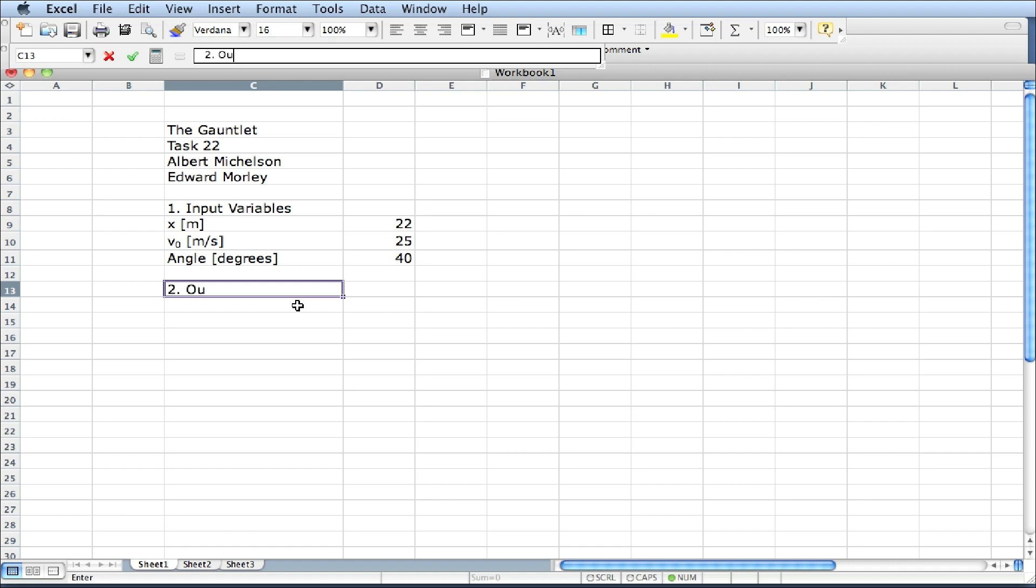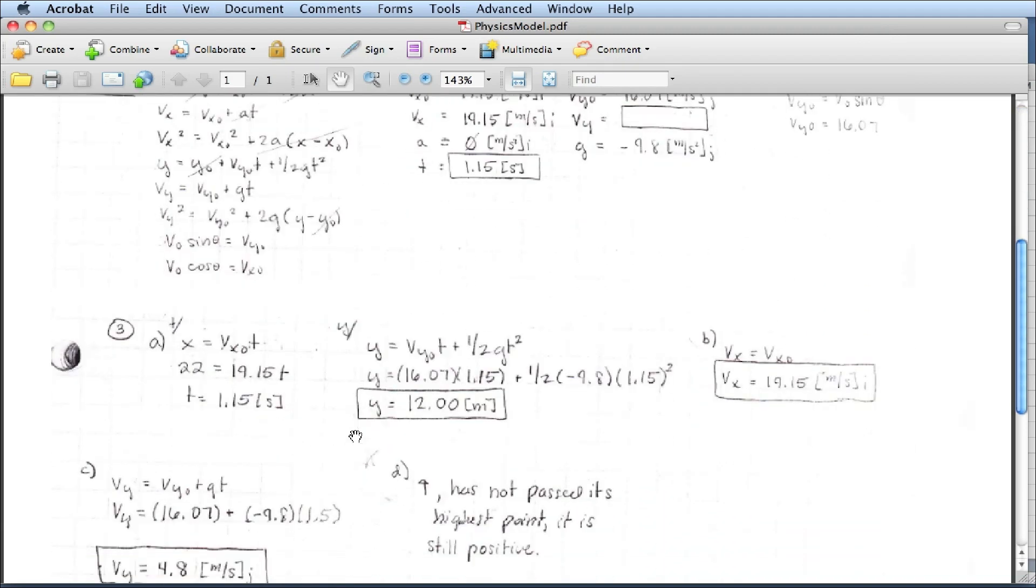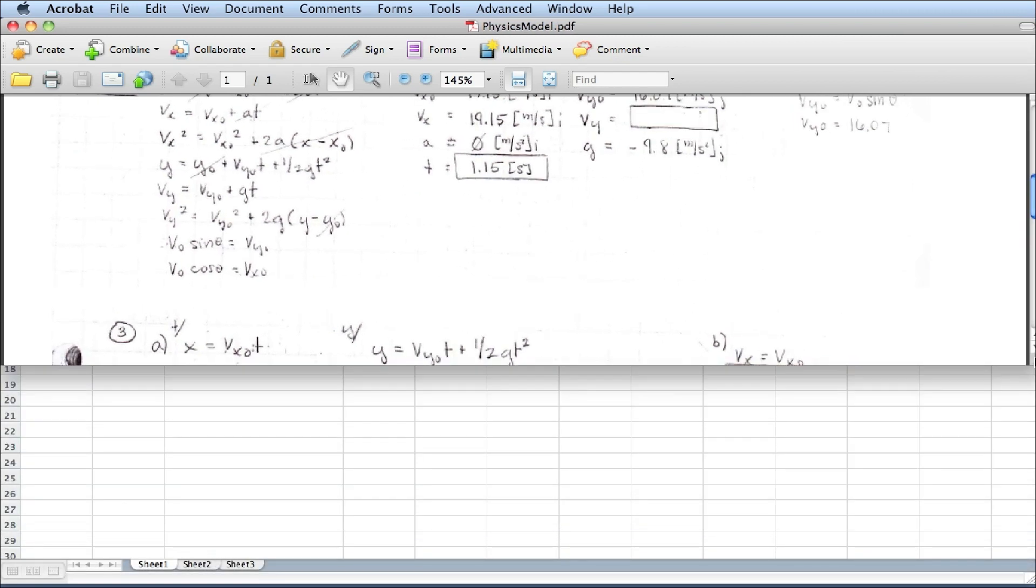Number two is the output variable. And that's going to be y. However, if you look here, it looks like there's an intermediate variable here, t, that was used to find y. So I'm going to put that in the output section. I actually want to superimpose this so I can see both of them.